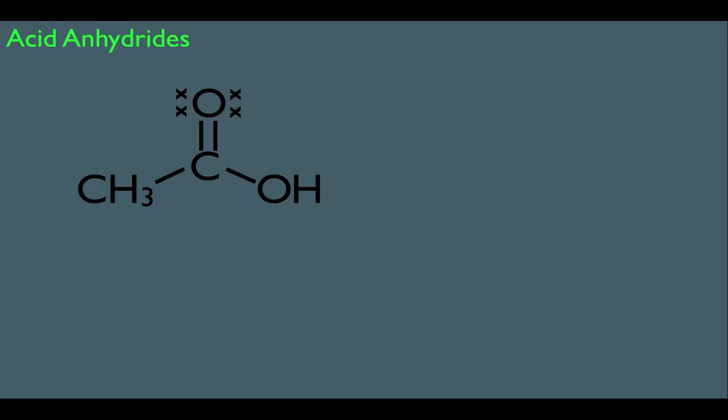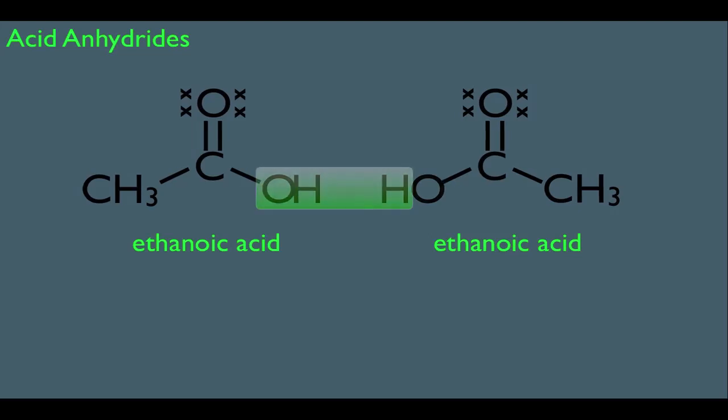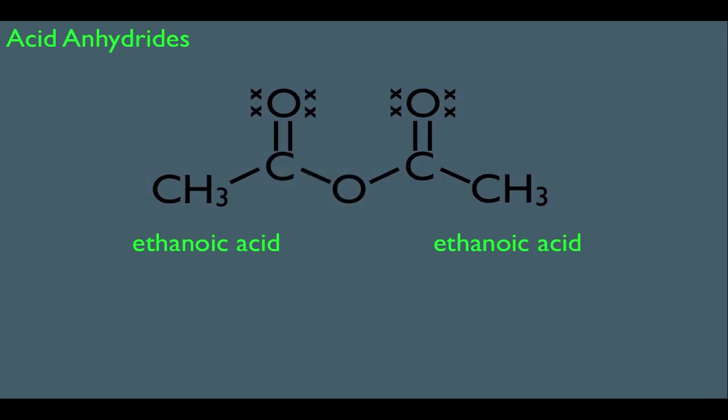Let's make sure first we understand what an acid anhydride looks like. Let's say you have this carboxylic acid right here — remember its name is ethanoic acid. And let's put another ethanoic acid over here to the right. If I were to combine these two carboxylic acids and at the same time take out water — two H's and an oxygen — and combine them together, this right here is what an anhydride looks like.